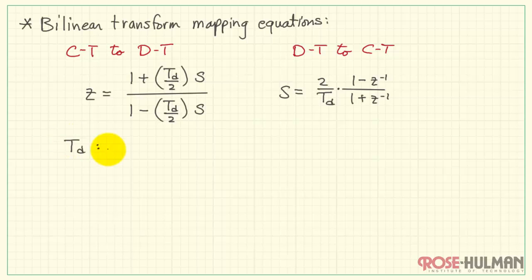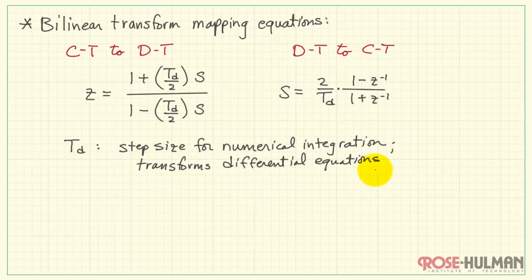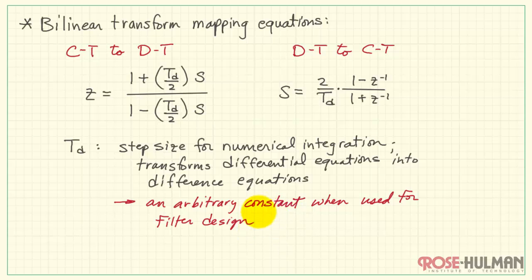Let's take a look at this t sub d parameter. This is a parameter associated with the step size when we're using numerical integration when we want to transform differential equations that are continuous time into difference equations that are discrete time. This turns out to be an arbitrary constant when we use the bilinear transform for filter design. For that reason, I will just choose t sub d equals 2 for simplicity's sake.